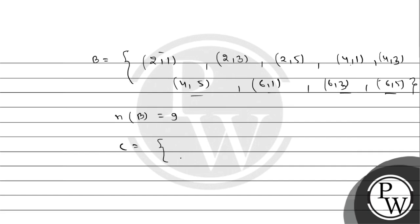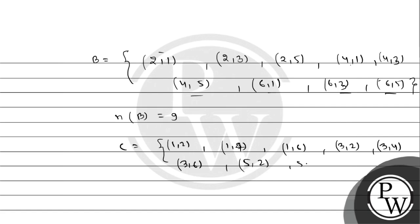Event C — first die odd, second die even — elements are: (1,2), (1,4), (1,6), (3,2), (3,4), (3,6), (5,2), (5,4), (5,6). C also has 9 elements. So A has 15, B has 9, and C has 9 elements.